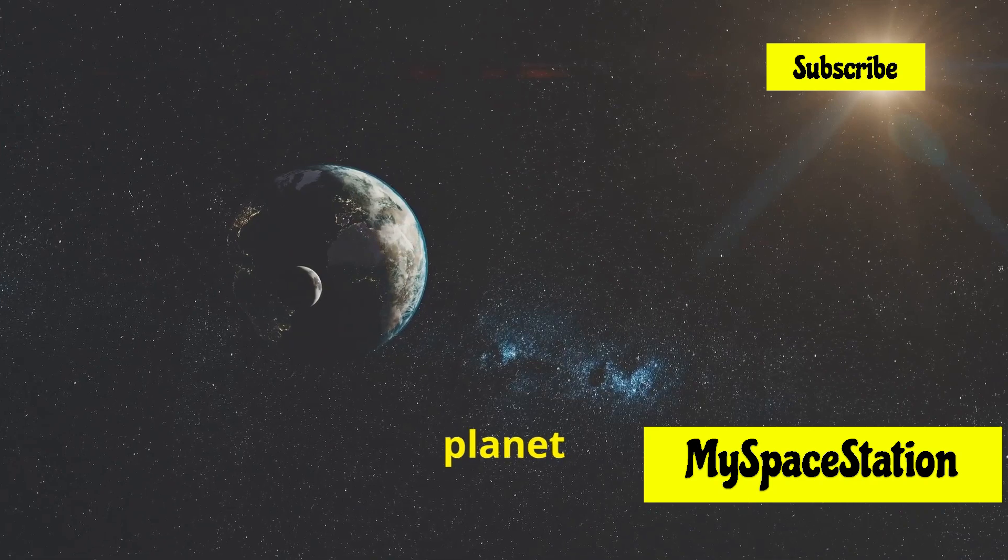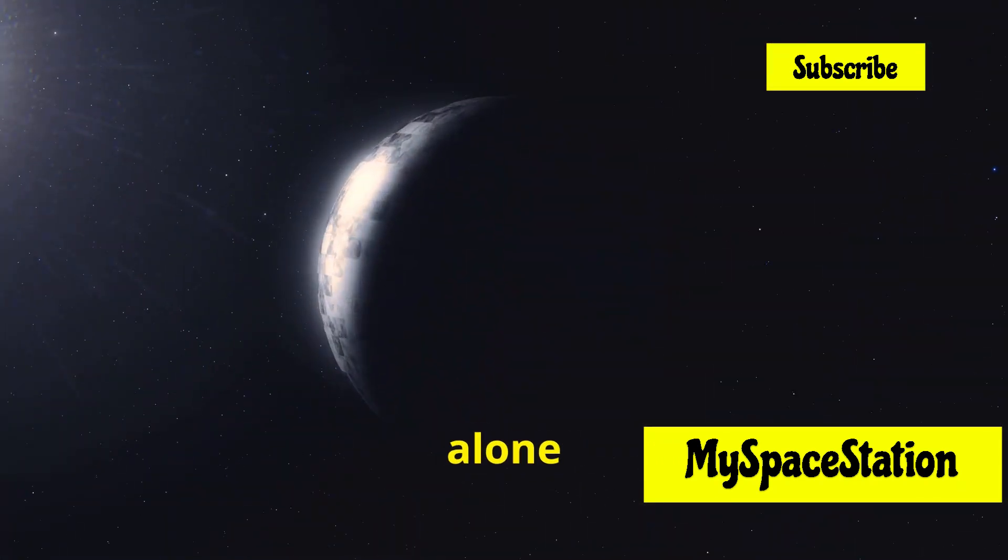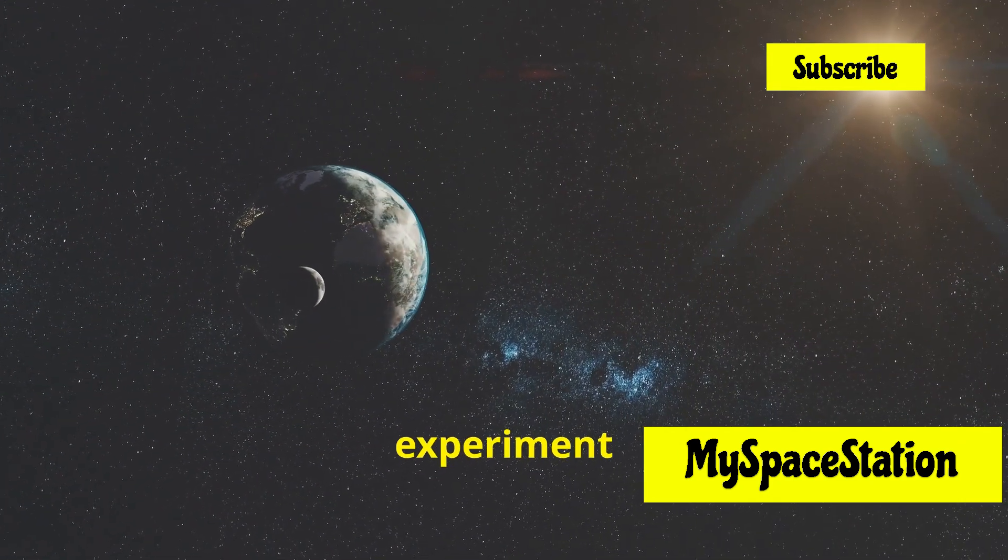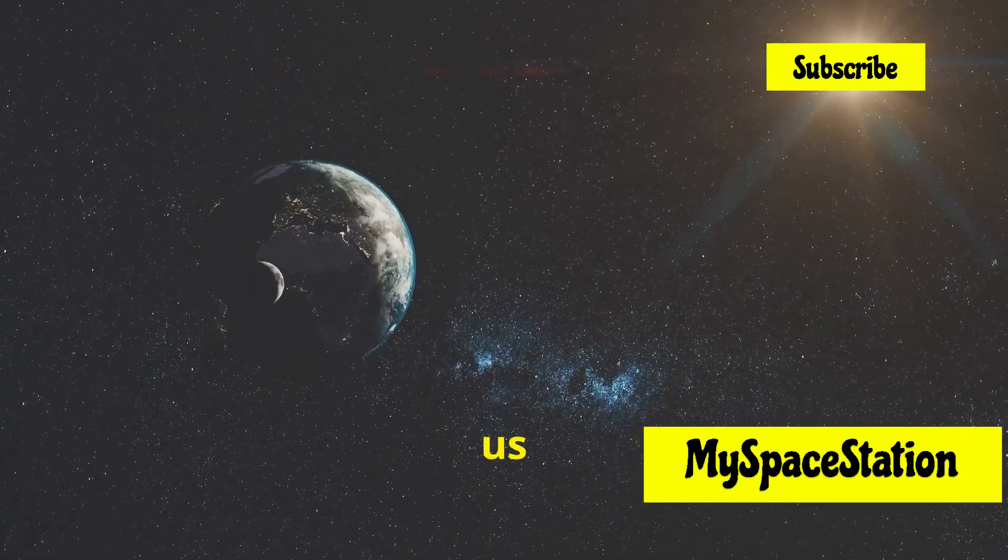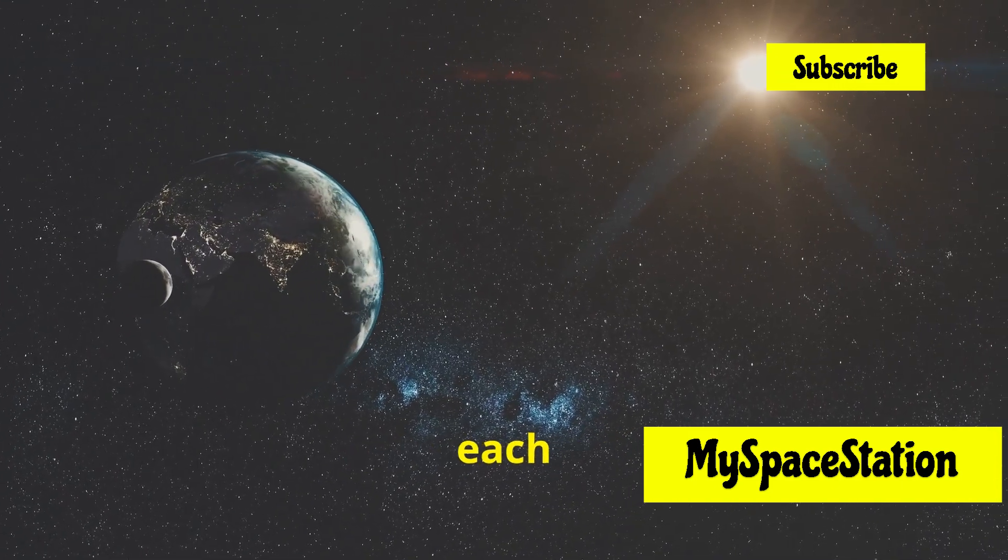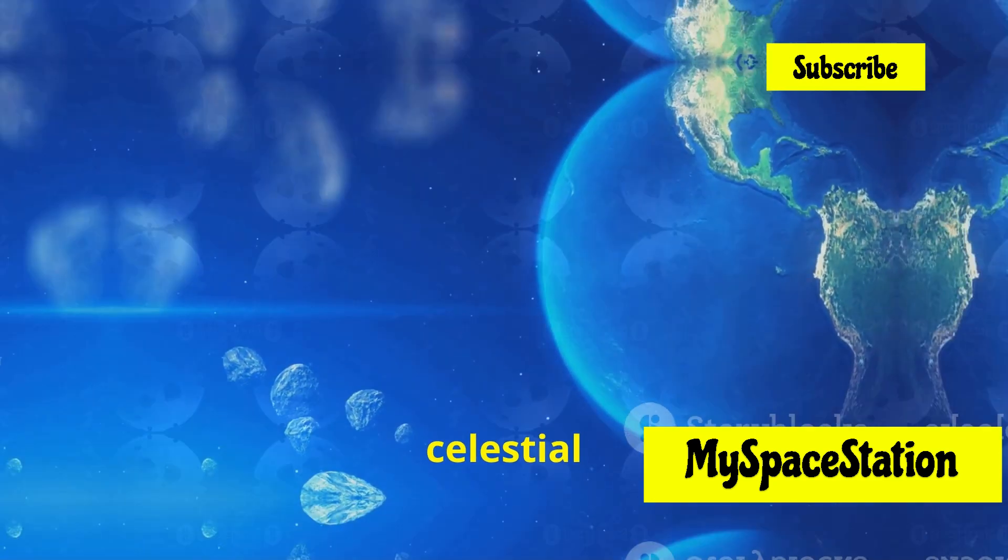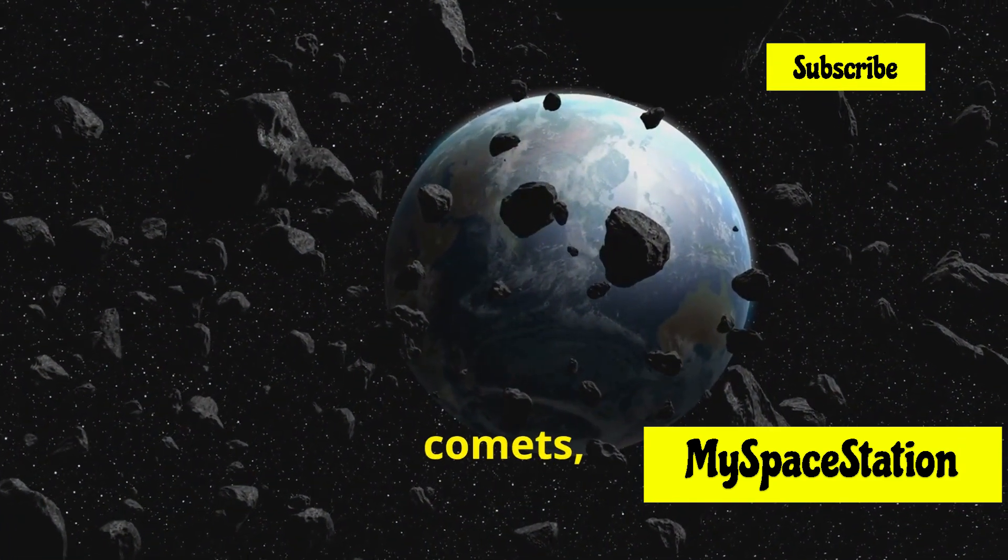But what if Earth was the only planet in our solar system? Imagine our pale blue dot alone in the vastness of space with only the distant stars as companions, devoid of neighboring planets. It's a thought experiment that sparks curiosity and allows us to appreciate the delicate balance of our cosmic neighborhood, where each planet plays a role. The gravitational pull of all these celestial bodies, including asteroids and comets,